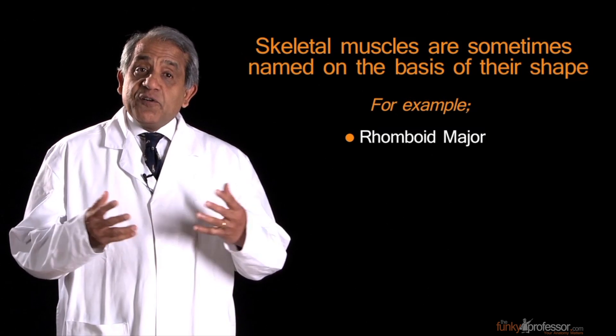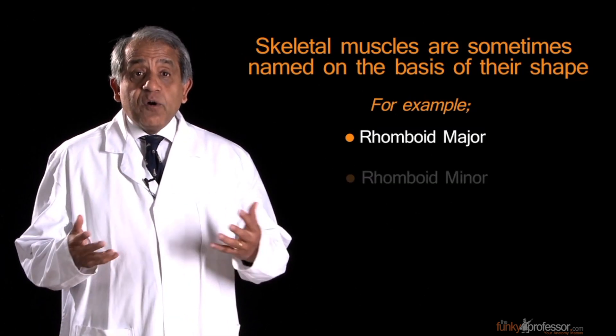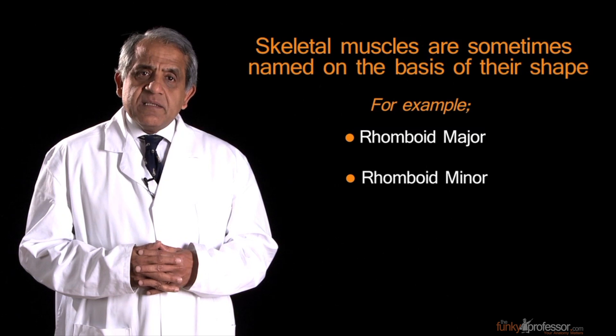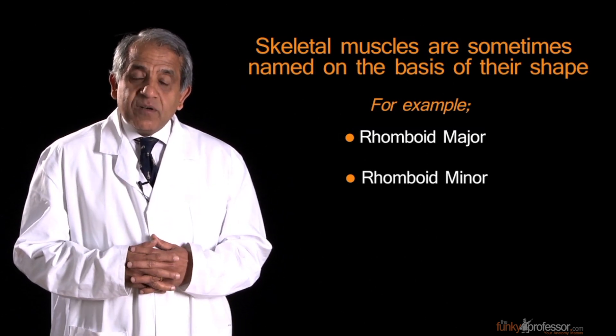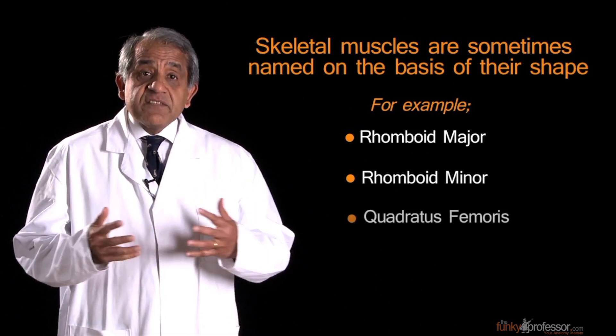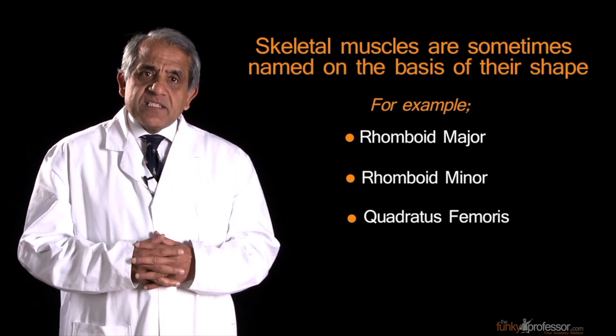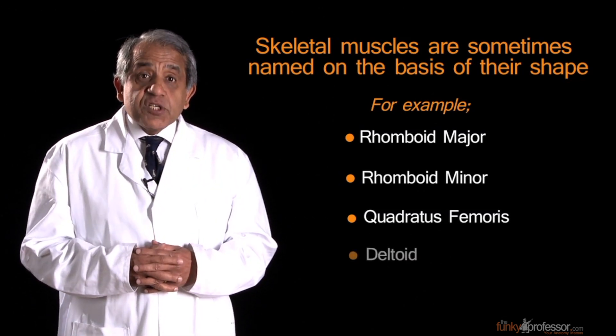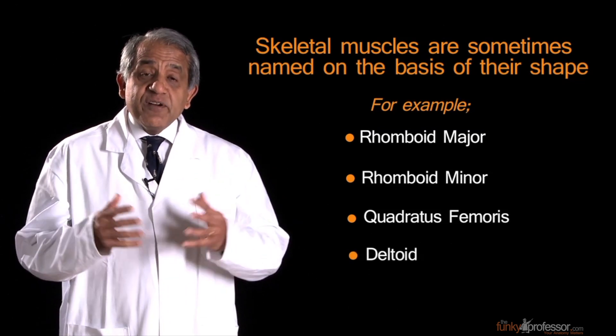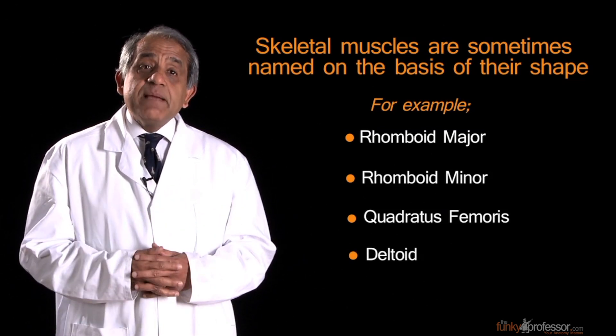Thus, rhomboid major and rhomboid minor are rhomboidal muscles, major and minor, big and small. Quadratus femoris, a muscle in the thigh, is a quadrate muscle. Deltoid, it's triangular in shape, so these are muscles named for their shape.